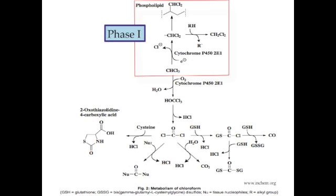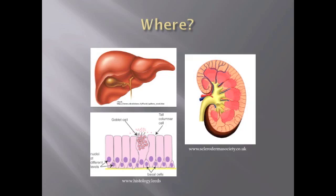The balance between oxidative and reductive pathways depends on species, gender, tissue, and oxygen tension of the organism. Almost all tissues are capable of metabolizing chloroform, although metabolism occurs mainly in the liver, kidney, and respiratory epithelium.